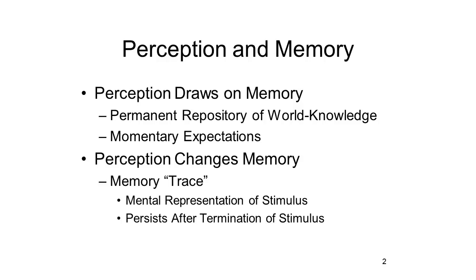These expectations are also stored in memory. But that's not the end of it. Perception doesn't just draw on memory — it also changes memory. Because perception leaves a trace of itself in memory, a mental representation of the stimulus event which persists after the stimulus itself has been terminated. Memory frees our experience, thought, and action from control by the immediately present physical stimulus environment, and allows us to perceive, contemplate, and respond to events in the past as well as events in the present. Viewed from this perspective, memory is critical for what we ordinarily construe as intelligent behavior.